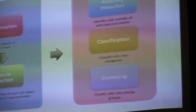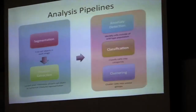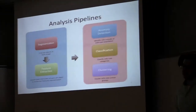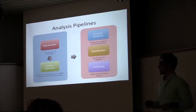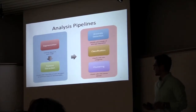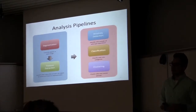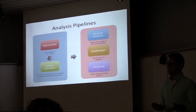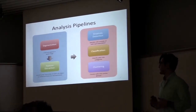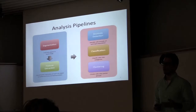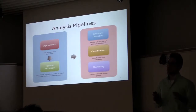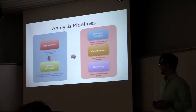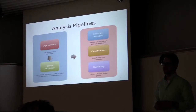The typical pipeline for any type of image analysis involves segmentation first — in our case, finding where the cells are in the images and treating them as individual objects. The next important step is feature extraction, where we take pixel information and extract features that are more descriptive for further analysis, which includes classification, where we bin cells into different categories, and clustering, where we group similar cells together.